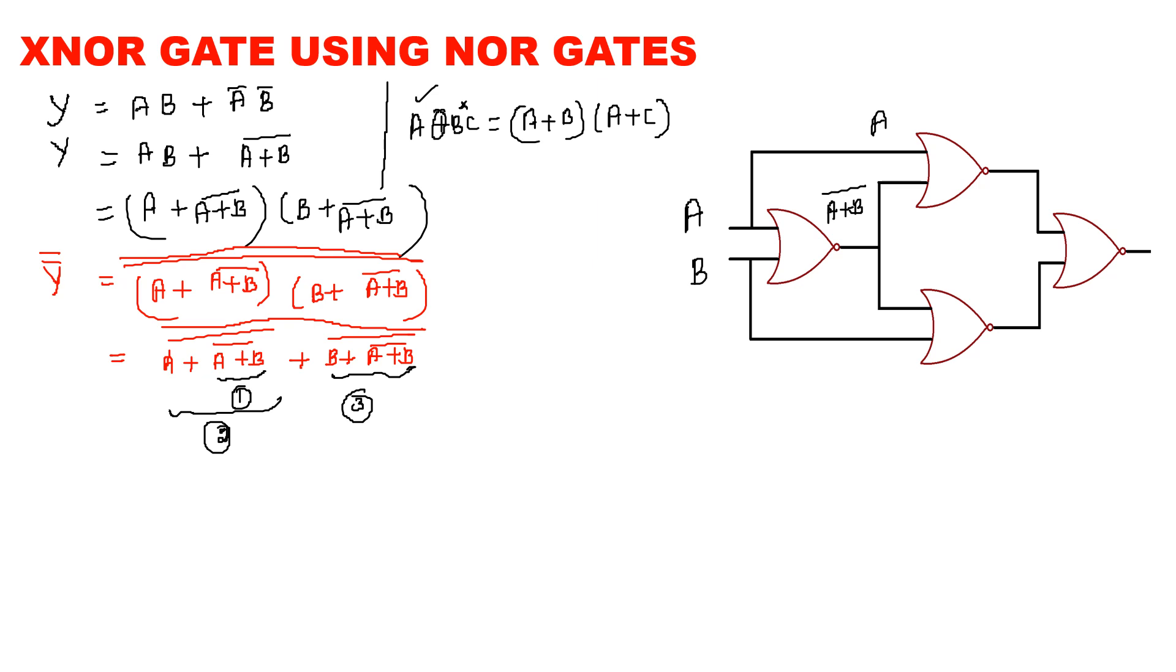So, here we get A plus A plus B the bar the whole bar. Here, B plus A plus B the bar the whole bar. Finally, both the values are given to the last NOR gate.